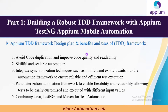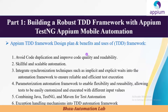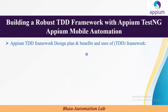The fifth point is combining Java, TestNG, and Maven into the test automation. Maven is a build management tool and Java is the language we'll use for coding — it is the most popular language. The sixth point covers exception handling mechanisms in the TDD framework, because we don't know when an exception will occur. We'll handle exceptions using try-catch mechanisms.